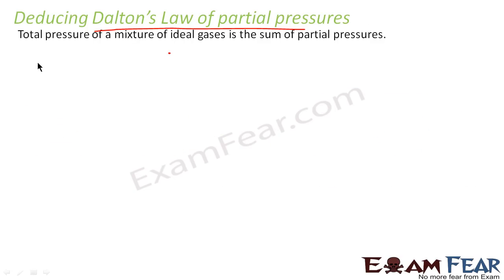What is basically the Dalton's law of partial pressure? It states that the total pressure of a mixture of ideal gases is the sum of partial pressures. That means if you have several ideal gases mixed together in a vessel, then the total pressure of that mixture is equal to the sum of the partial pressures.